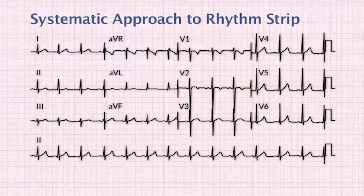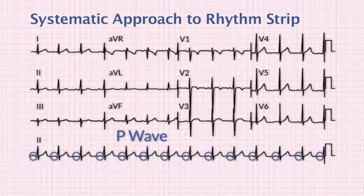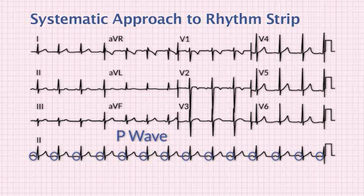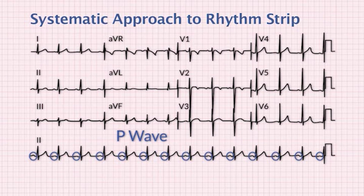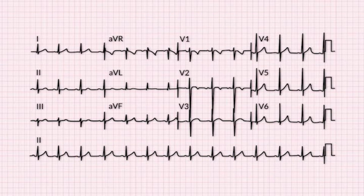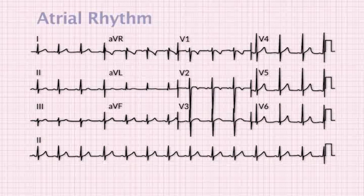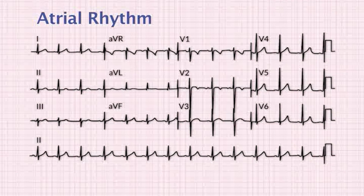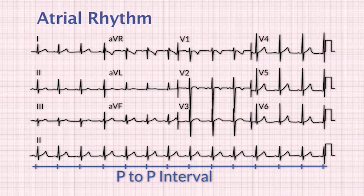When interpreting ECG rhythms, it is important to follow an organized method. The following steps are one way to interpret rhythm strips. Step one: evaluate the P wave. Are the P waves present? This indicates atrial depolarization. Are the P waves normal shape — upright and round? Are all the P waves the same shape? Do you see one P wave for each QRS complex? Step two: evaluate the atrial rhythm. Measure the interval between two consecutive P waves — this is known as the P-to-P interval. Is the rate regular or irregular?